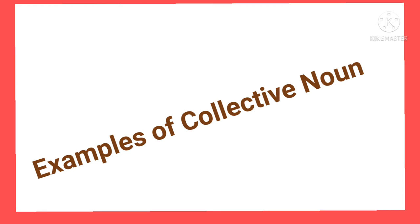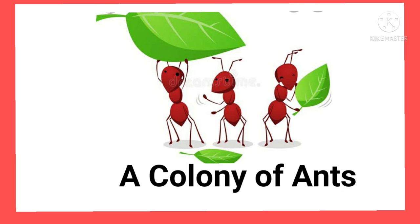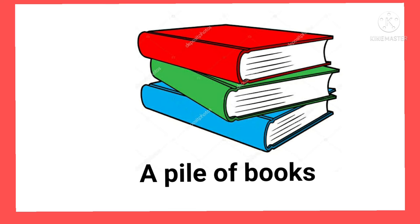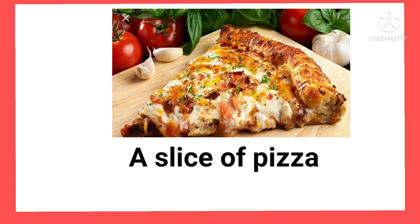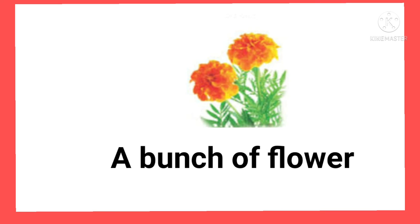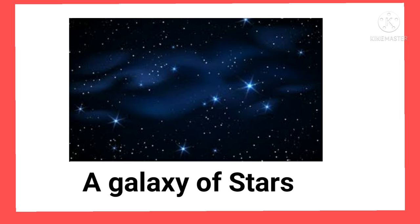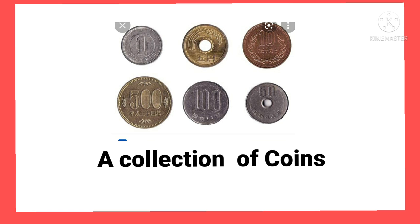Examples of collective nouns: A colony of ants. A pile of books. A slice of pizza. A bunch of flour. A galaxy of stars. A collection of coins.